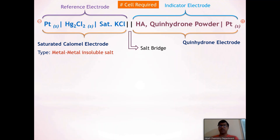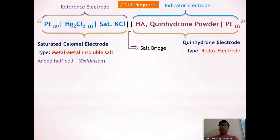The saturated KCl electrode comes under the metal-metal insoluble salt type of electrode, while the quinhydrone electrode comes under the redox type of electrode. As the saturated KCl electrode is present on the left-hand side of the cell representation, it is known as the anodic half cell, on which oxidation reaction takes place. The quinhydrone electrode on the right-hand side is the cathodic half cell, on which reduction reaction takes place. The salt bridge connects the two half cells.